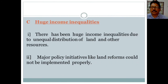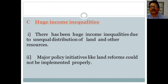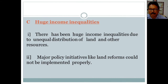Another cause is huge income inequalities due to the unequal distribution of land and other resources. Some people are landless while others are zamindars with more than 10 hectares of land. Also, major policy initiatives like land reforms could not be implemented properly — the government could not take land from large landowners and distribute it among the landless poor.